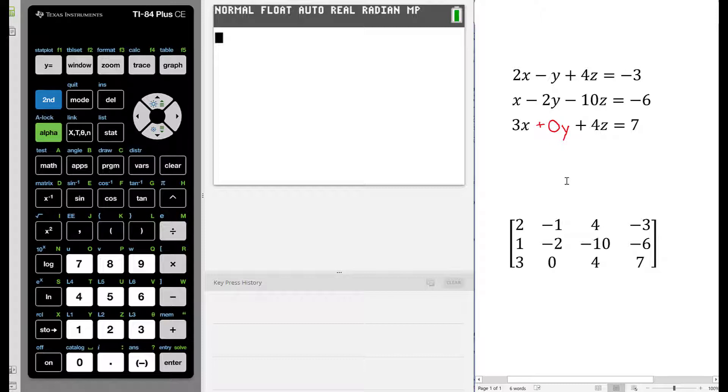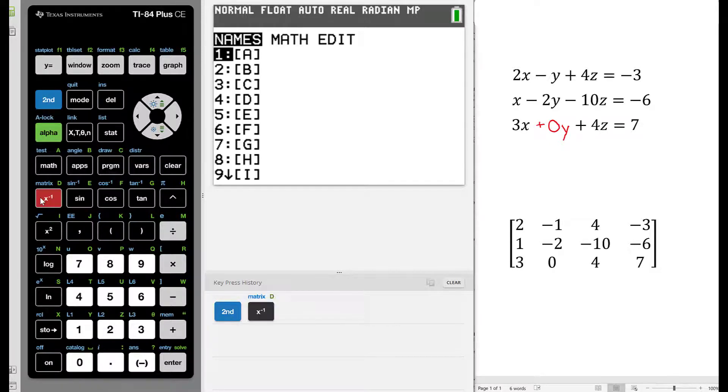Now that we have our augmented matrix written out, we can input this into the graphing calculator. Let's go ahead and press the second button, which is the blue button on the left-hand side of your graphing calculator. Next, we will press the x to the negative 1 button in order to access the matrix feature, which is written right above it.